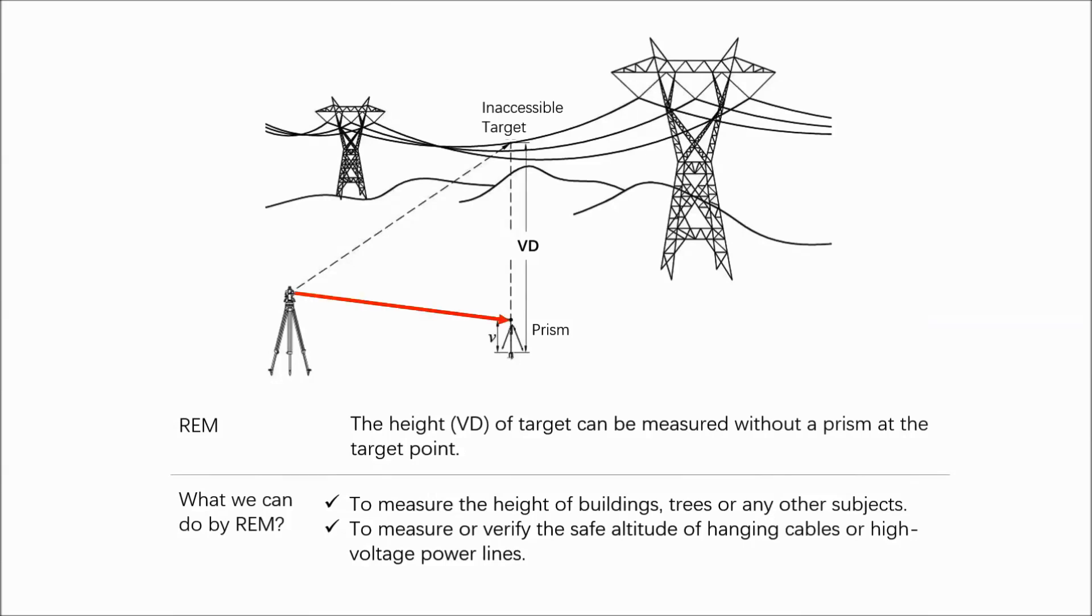Set a prism on the plumbing line below the target and measure the prism height. The target can be measured with or without prism height.